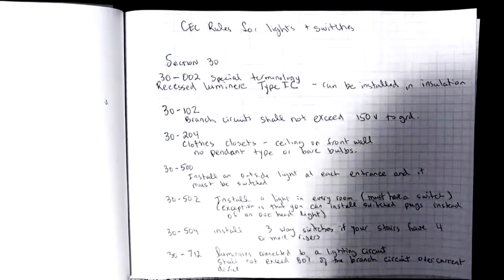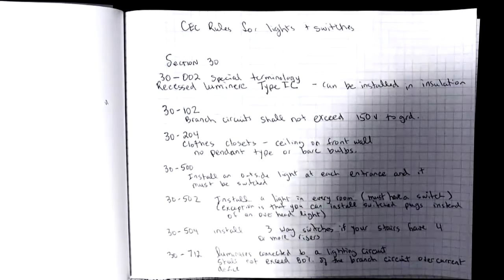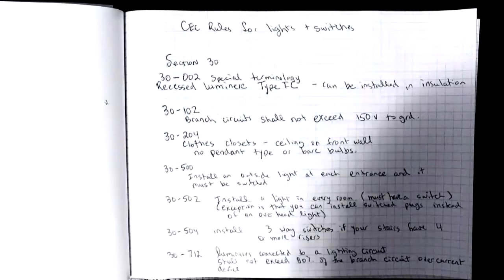Okay everybody, we're going to look at the CEC rules for lights and switches, section 30. I'm just going to look at a few of them so that you can get this wiring project done.